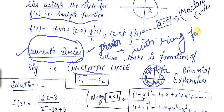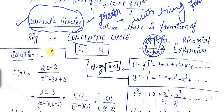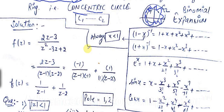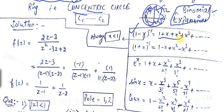Before the solution, you need to memorize the binomial expansion formulas. For (1 − x)^(−1), the expansion is 1 + x + x² + x³ + ... — when both signs are negative, all signs in the expansion are positive. For (1 + x)^(−1), the signs alternate: plus, minus, plus, minus, starting with plus for even powers and minus for odd powers.